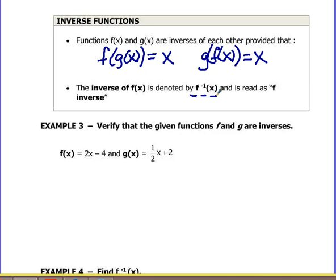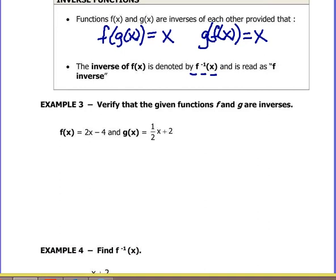We need to prove two things. I want to prove that 2x minus 4 and 1 half x plus 2 are inverses in example 3. So we need to show that f of g of x equals x and we need to show that g of f of x equals x.